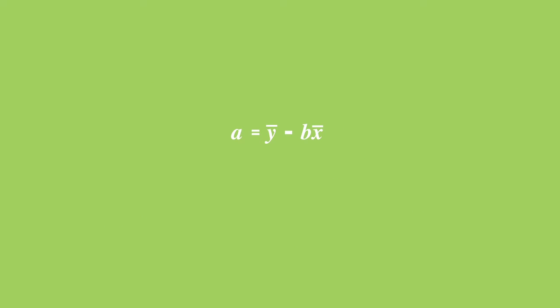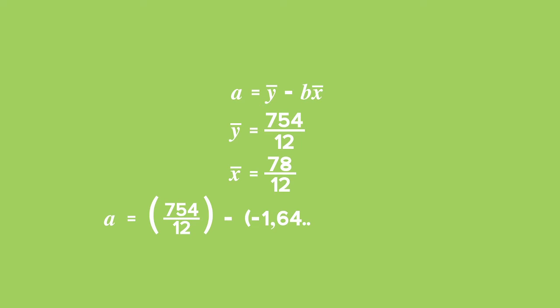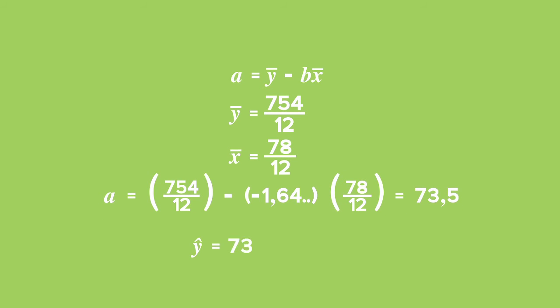To calculate a, you need to work out the mean and the x and y values by dividing each of their sums by the number of data points, 12. Therefore, a is equal to 754 divided by 12 minus b, which is negative 1.64 times by 78 divided by 12, and that is equal to 73.5. Substituting the values for a and b that we have just worked out, we get the equation of the least squares regression line is y hat equals 73.5 minus 1.64 times x.